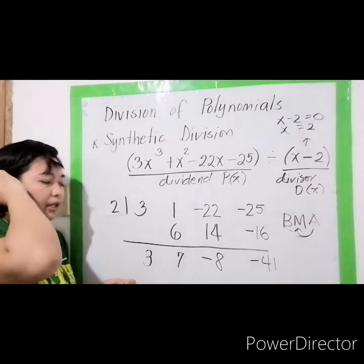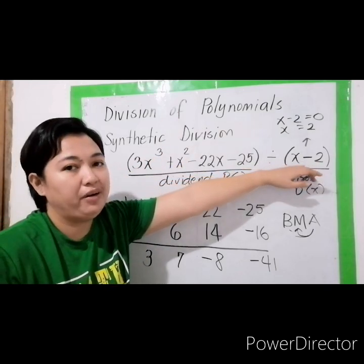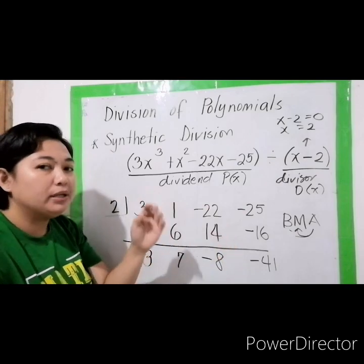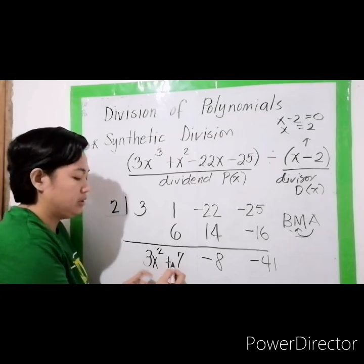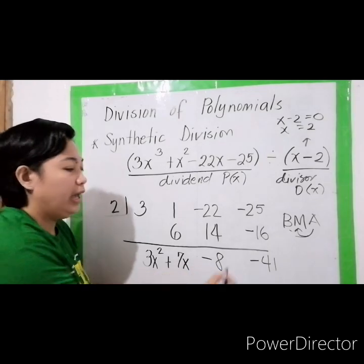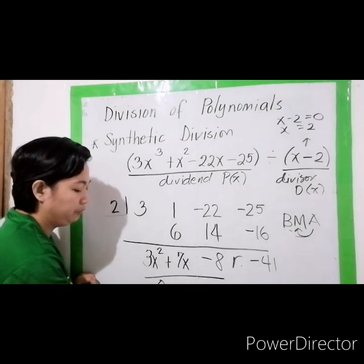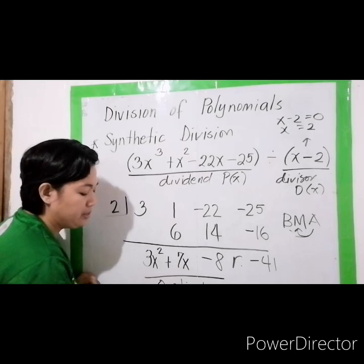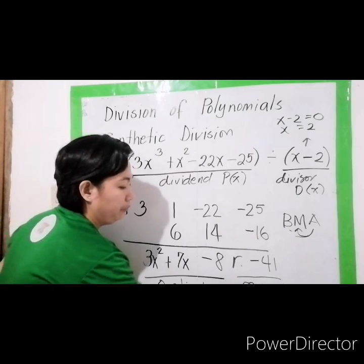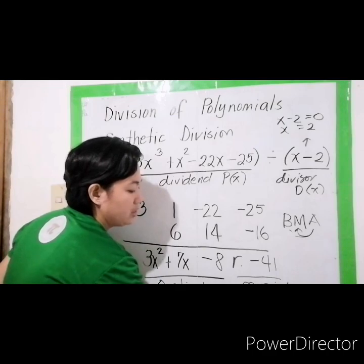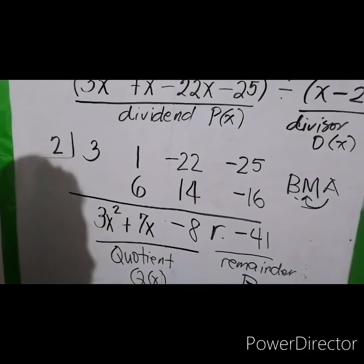How do we write down our quotient? The highest exponent in the dividend is 3 and in the divisor is 1, so 3 minus 1 is 2. Our quotient starts at x raised to 2. So: x raised to 2 plus 7x minus 8. This last value, negative 41, will be your remainder. This is your quotient Q of x, and this is your remainder R.